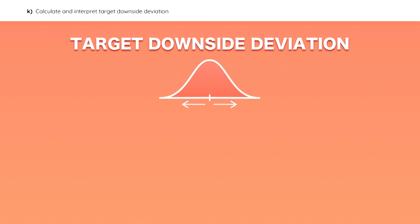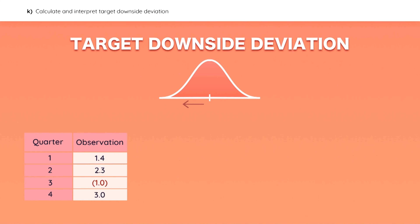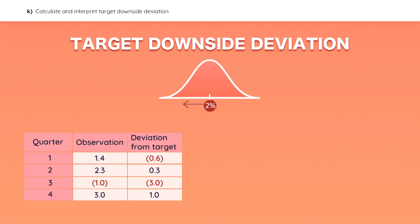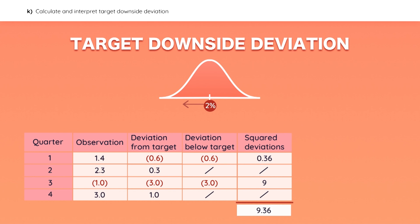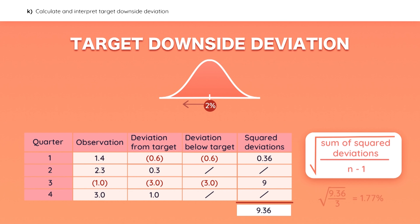The standard deviation shows the dispersion of returns below and above a value, but many times investors are only worried about downside risk — that's why you need to know how to calculate target downside deviation. Given quarterly portfolio returns and a 2% target return, first calculate each return's deviation from the target, focusing only on deviations below the target. Next, square those deviations and calculate the sum. Then apply the formula to get the target downside deviation, which should equal 1.77%.